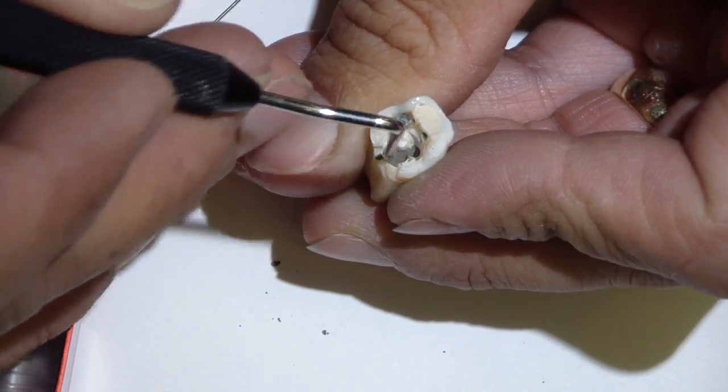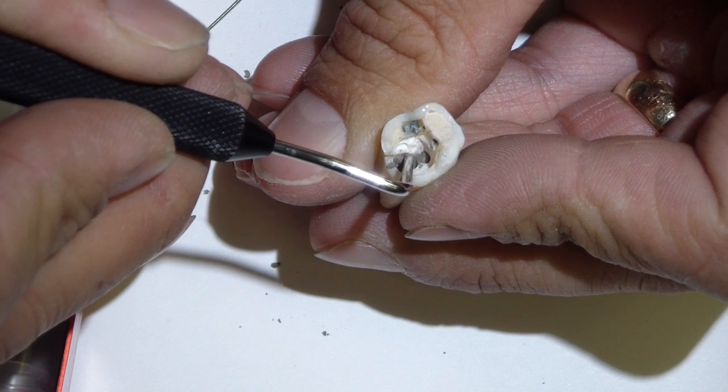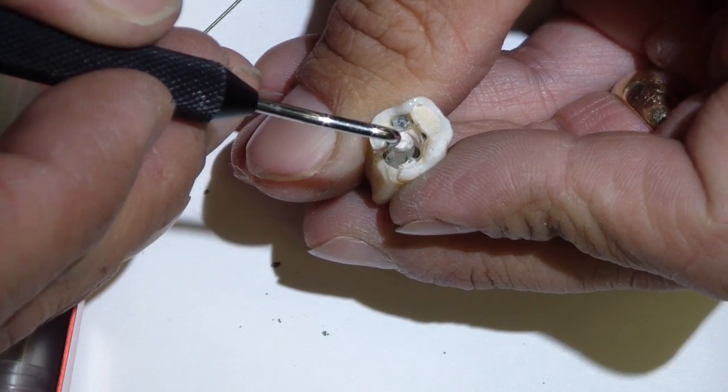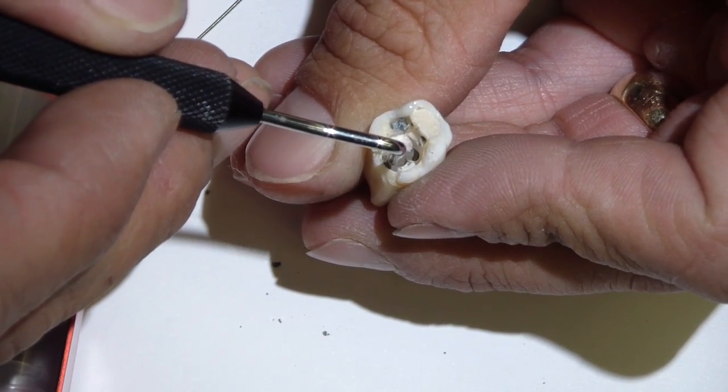In this case, we could place another layer of MTA, and then place our restoration, whether we're completed with the endodontic therapy or our provisional restoration or whatever.